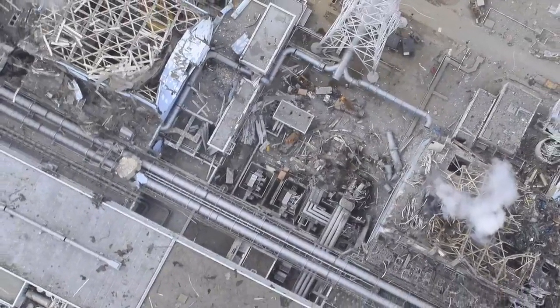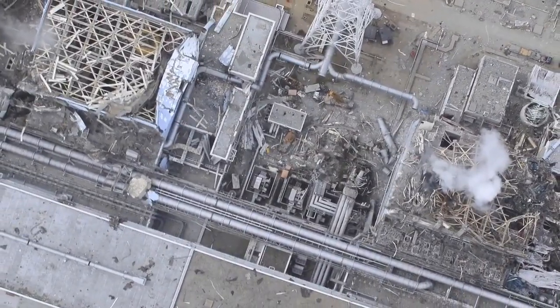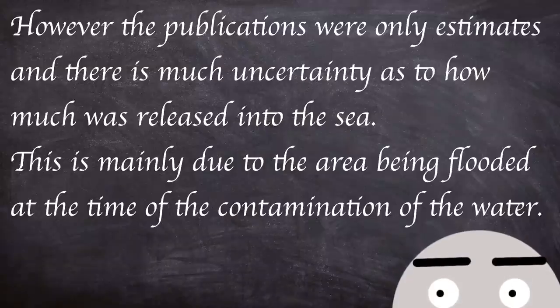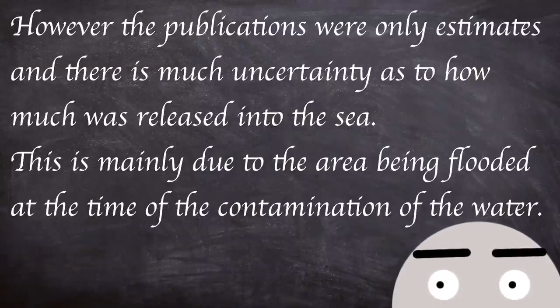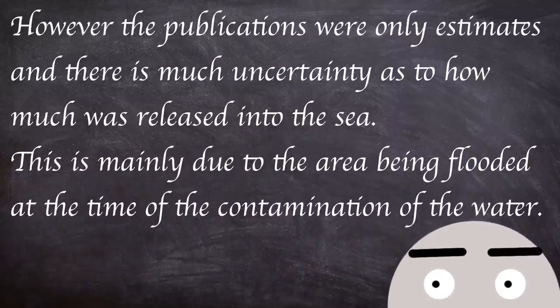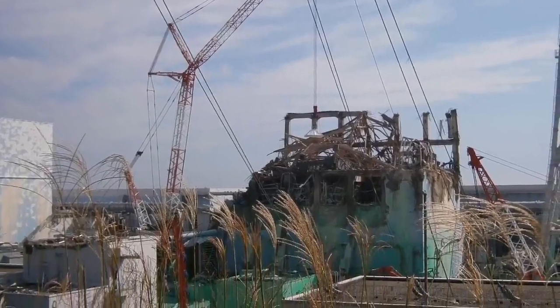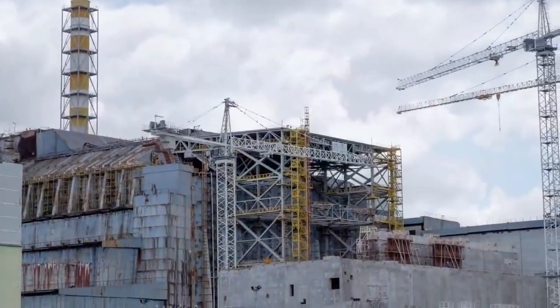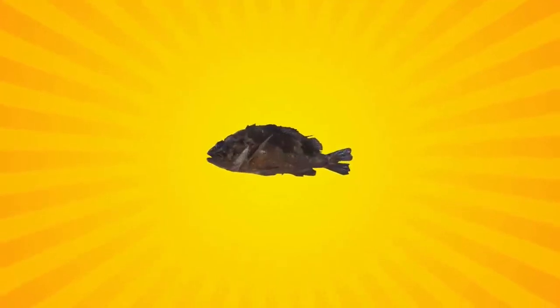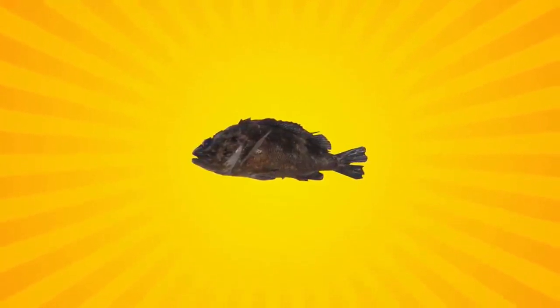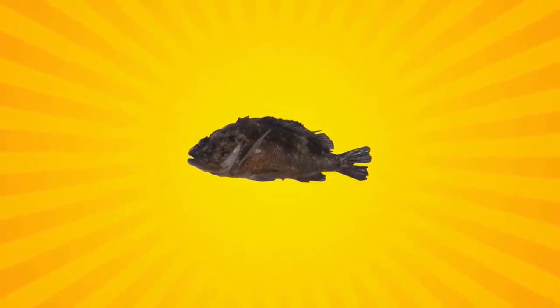The release into the ocean came from the water pumped into reactors during the force cooling which had subsequently been contaminated by the damaged reactor cores. However the publications were only estimates and there is much uncertainty as to how much was released into the sea. This is mainly due to the area being flooded at the time of the contamination of the water. It was estimated that Fukushima released around one-tenth of the contamination of Chernobyl. Tests on caught fish around the area were shown to have the same levels of contamination in 2012 as they had post-accident in 2011, hinting at a more prolonged release of contaminants into the ocean.